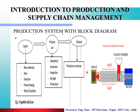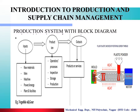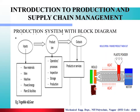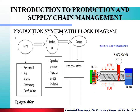As you can see in the animation here, the input is plastic granules, then we apply heat — that is called the production process. And the output or finished goods that we get is the mold. So this is one example of the production process. Input is plastic powder, process is molding, and output or finished goods is a mold. That is the simple production system with a block diagram.